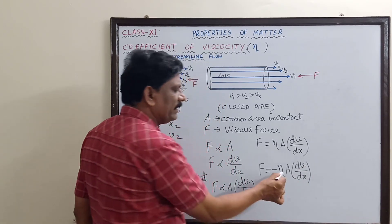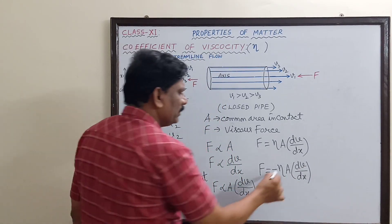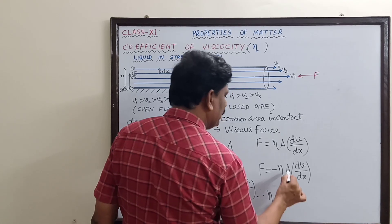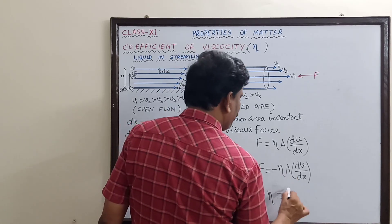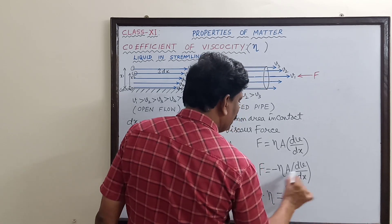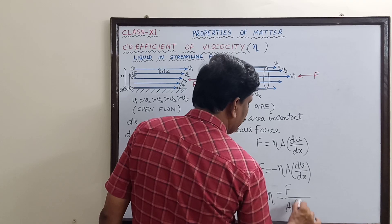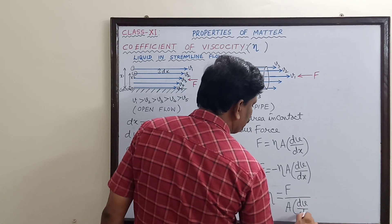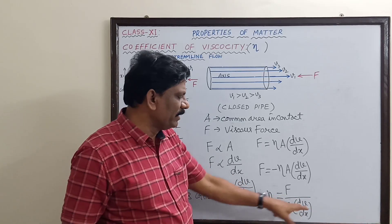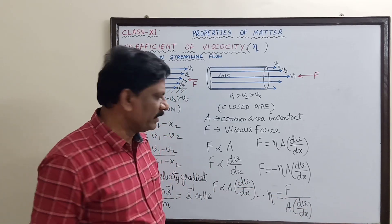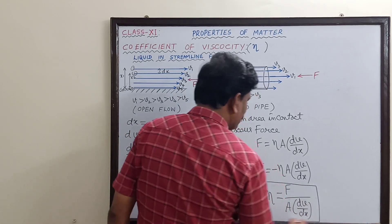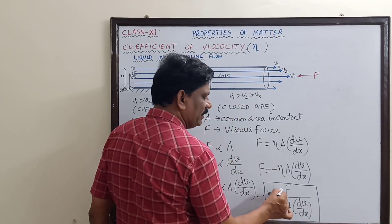Therefore, eta equals F divided by A · (dv/dx), or equivalently F · dx divided by A · dv. This is the expression for the coefficient of viscosity. The minus sign only signifies it is an opposing force; in magnitude we can write it without the minus sign.